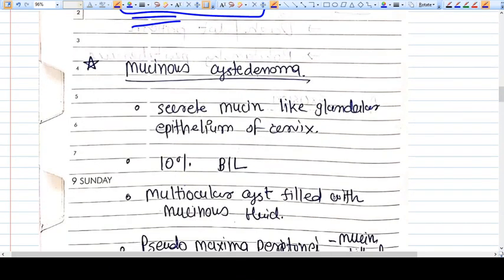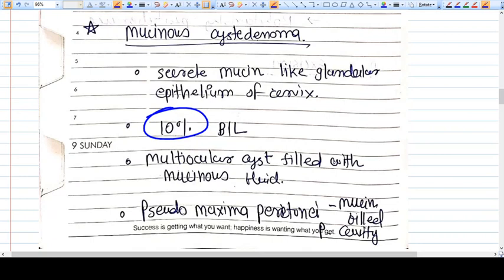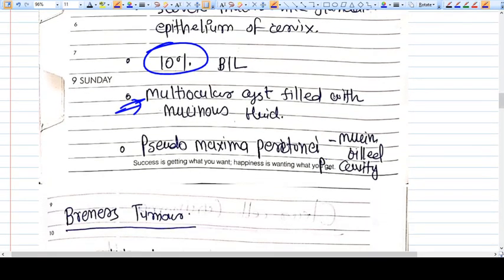Mucinous cystadenoma—the name describes mucin secretion. If you don't know what mucin looks like, it resembles cervical discharge. It's 10% bilateral and multilocular with septa.